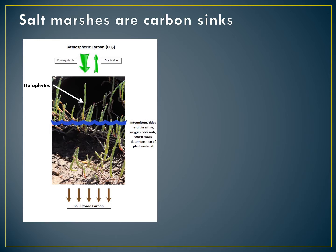The plants within this ecosystem are salt-tolerant species called halophytes. The plant takes in carbon dioxide during the process of photosynthesis. Some of it is turned into sugars that become the leaves, stems and roots of the plants, while the rest is lost back to the atmosphere through respiration. The carbon stored within the plant is retained in the soil when the plant dies or loses leaves or other materials. As this soil is frequently covered in saline water, it is very oxygen-poor and therefore the breakdown of plant materials occurs very slowly, resulting in significant carbon storage.